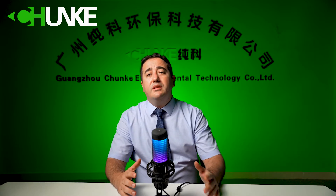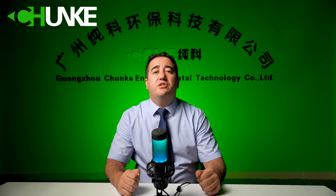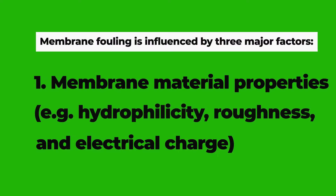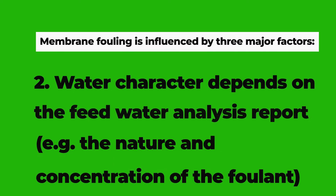Membrane fouling is influenced by three major factors. One: membrane material properties — for example, hydrophilicity, roughness, and electrical charge. Second: water characteristics, which depend on the feedwater analysis report — for example, concentration of the foulant, turbidity, and total suspended solids.